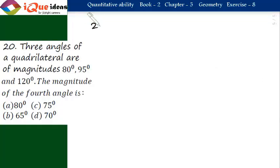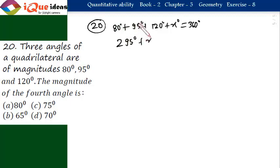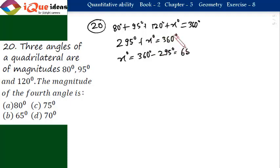The next question relates to a quadrilateral. Three angles are 80 degrees, 95 degrees, and 120 degrees. The sum of all four angles in a quadrilateral is 360 degrees. So, 80 plus 95 plus 120 plus x equals 360. That gives 295 plus x equals 360, so the fourth angle x equals 360 minus 295, which is 65 degrees — option B.